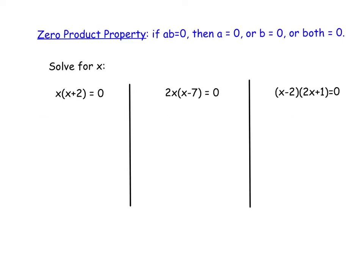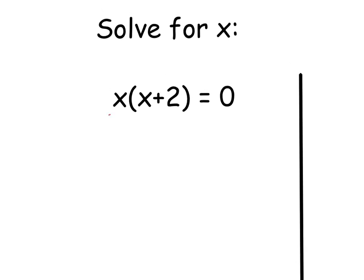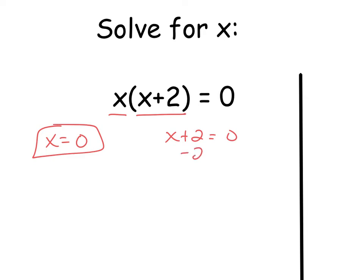That's called the zero product property. For a more definitive definition: if a times b equals zero, then a equals zero, or b equals zero, or both equal zero. So, when you're asked to solve for x using the zero product property, you're looking at two things multiplied together to give you zero — either x or x plus two has to equal zero. You write two equations: x equals zero, and x plus two equals zero. This first one's already solved. For the other, subtract two from both sides and we get x equals negative two. So, we have two answers: x equals zero and x equals negative two.